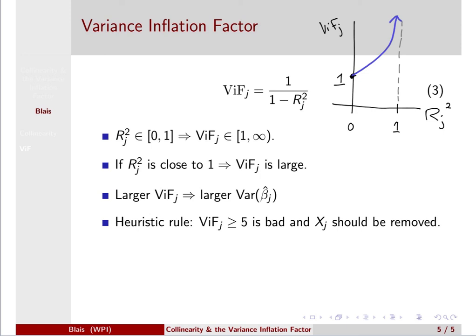And so think again about this in terms of what the rj-squared tells you. When rj-squared is getting closer to 1, that means those other predictors are good predictors of Xj, which is bad. That's redundancy in your system of predictors.